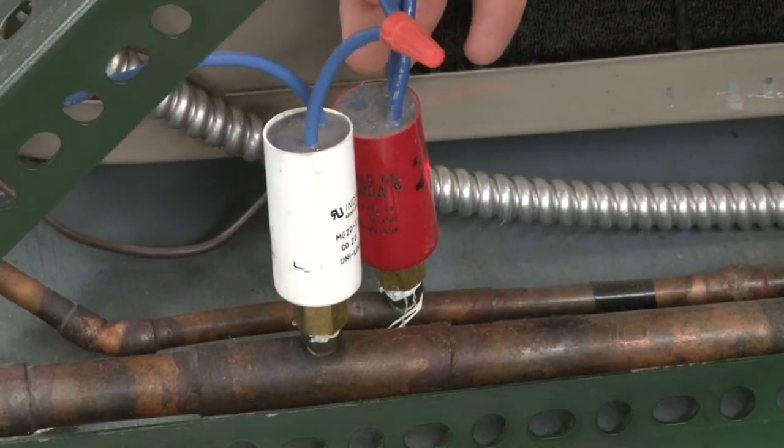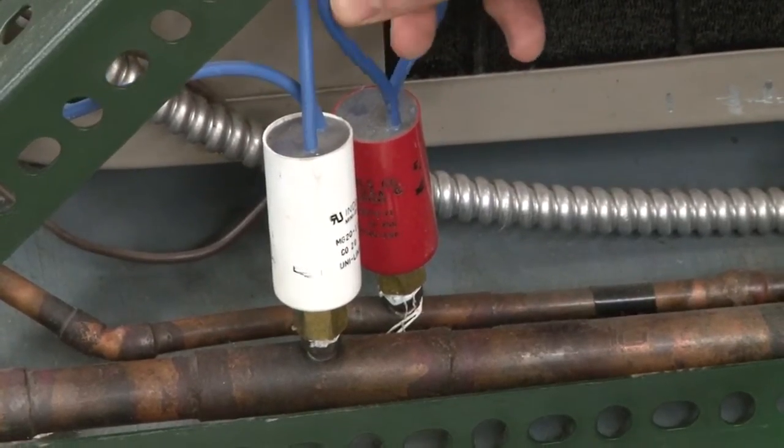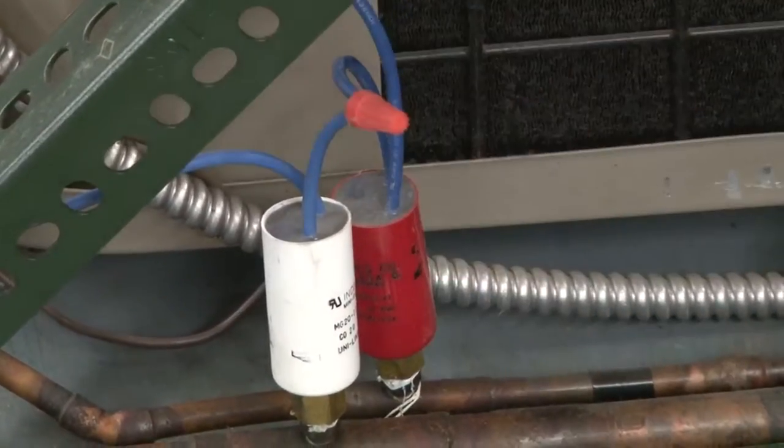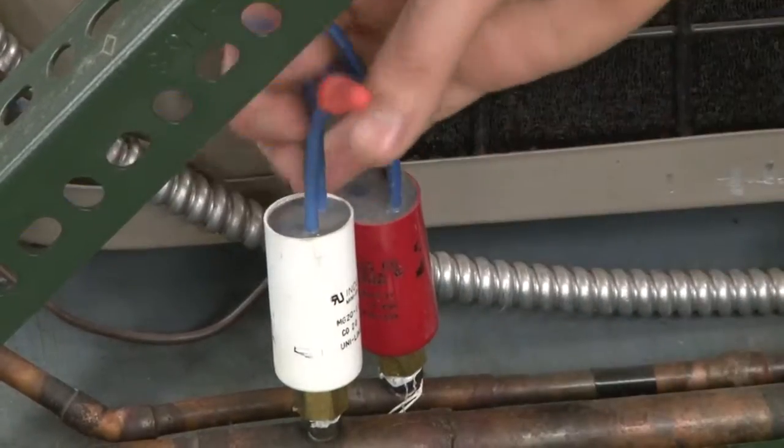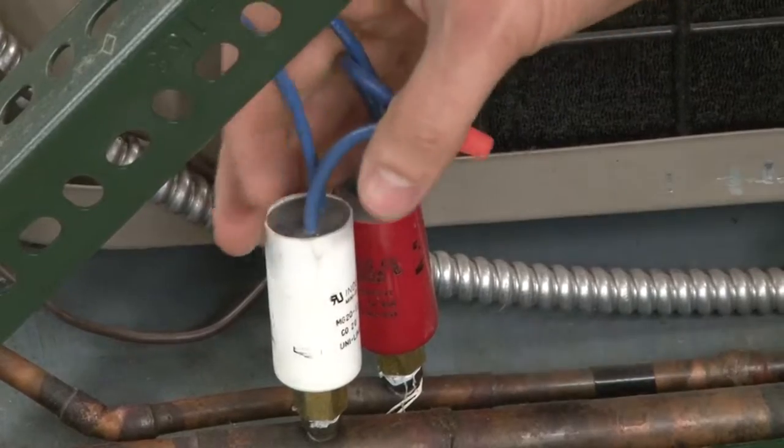Your high side pressure line, if our pressure gets too high, this would open up and shut off our system through our contactor. Again, they're wired in series together through our contactor.